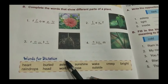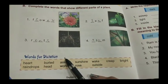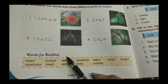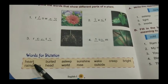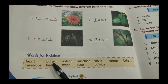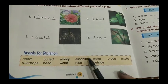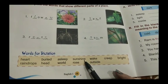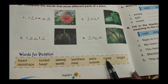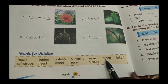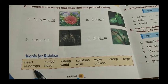Here are some words for dictation. I will repeat these words. First word is heart, second is buried, third is asleep, fourth is sunshine, fifth is wake, sixth is creep, seventh is bright, eighth is raindrops.